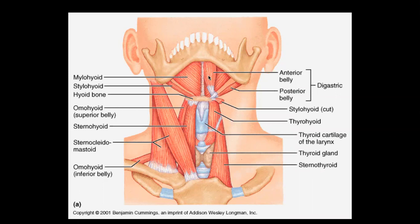There is no paper without at least one question from anterior triangle — it is one of the most important topics. There are four triangles in the anterior triangle: submental triangle, submandibular triangle, carotid triangle, and muscular triangle.